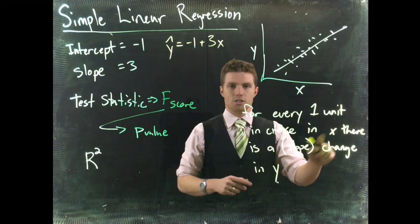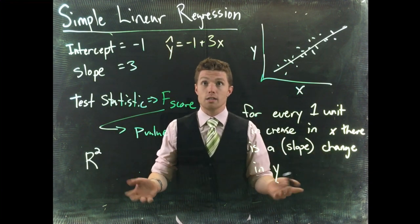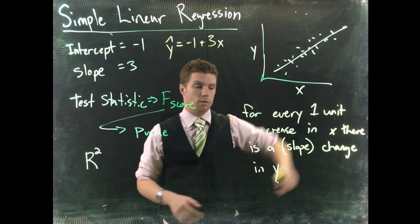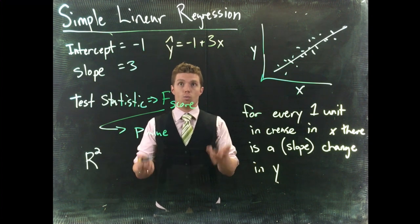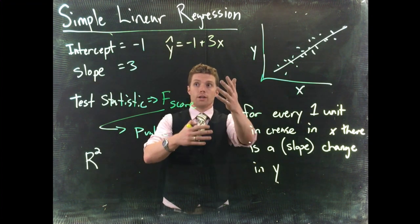I put slope here because, and instead of just increase here, it could be decrease if we had a negative slope. But yeah, for every one unit increase in x, there is a slope change in y. So that's how we interpret these results.